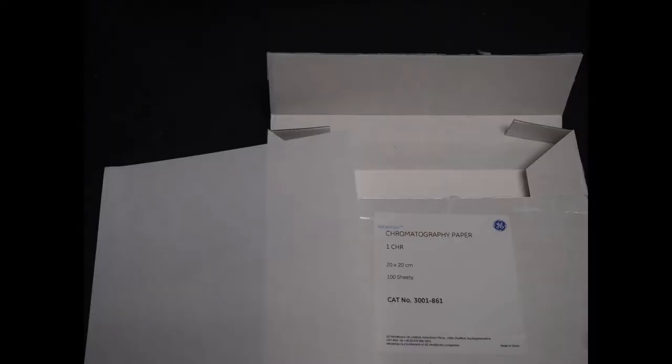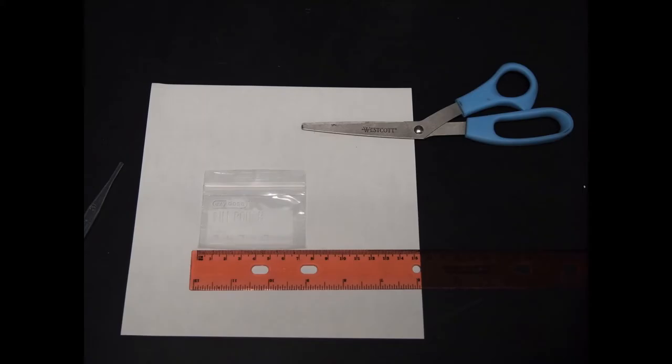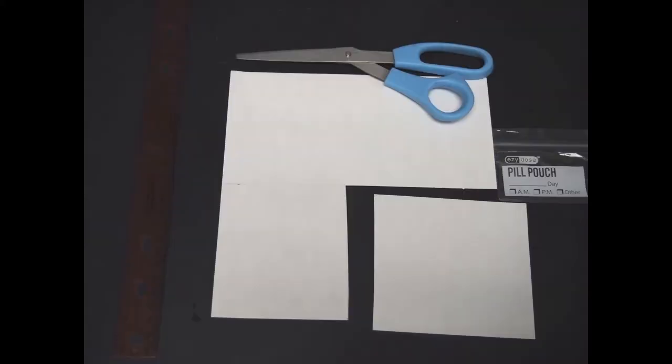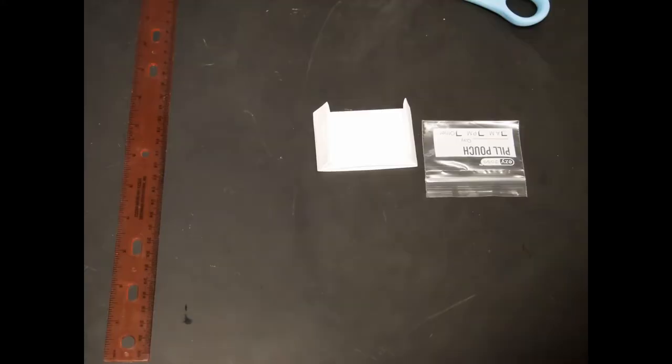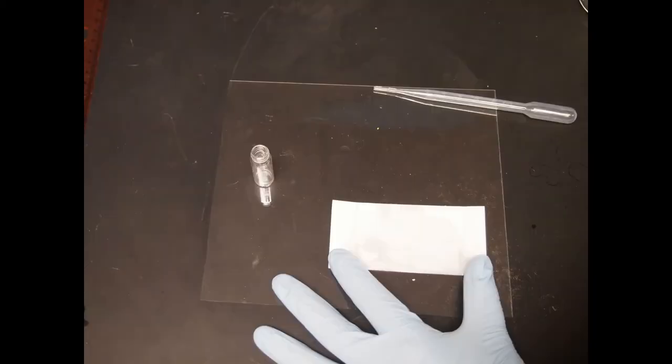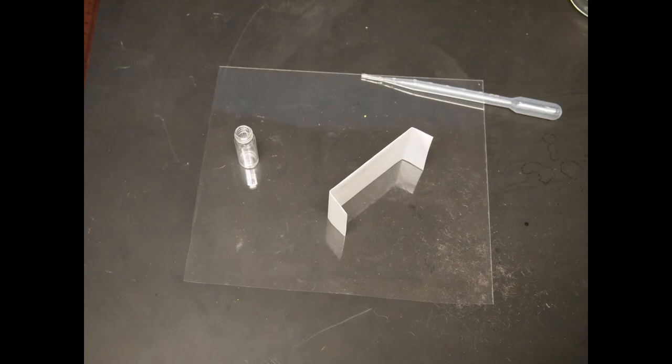We're going to start with some Whatman 1-CHR chromatography paper, and I'm going to use just a pair of scissors to cut that to fit into this little pill pouch bag. Once that's cut, I fold it into a little envelope just the size of the bag and prepare some 2-propanol and Nafion solution for pipetting. I pipet that onto the little paper envelope and then let it soak through, stand the paper envelope up, and allow it to dry for an hour or more.